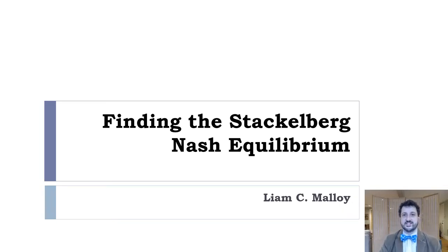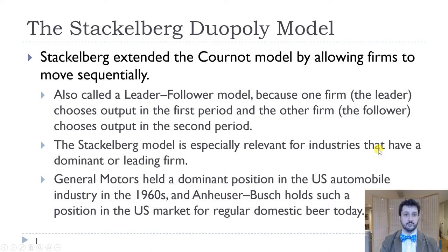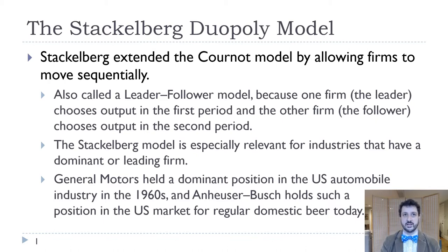In this video, we're going to talk about the Stackelberg model of oligopoly. The Stackelberg model is really just like the Cournot model with only one difference: the firms don't move at the same time — one firm moves first and the other firm moves after. This is often called a leader-follower model. We're going to stick with the duopoly case, though it can be extended to three, four, five, or six firms.